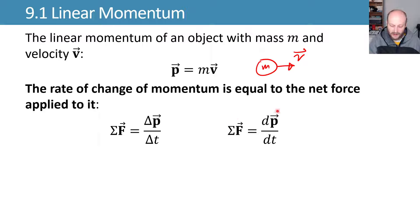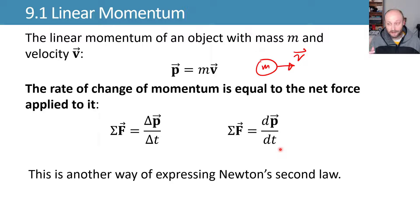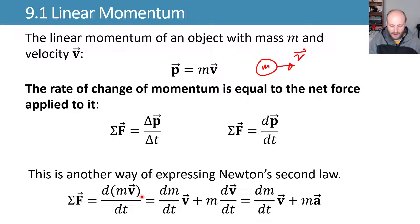So sum of your forces are equal to dp dt. You might be used to sum of the forces are equal to mass times acceleration, and if we start with our linear momentum and substitute in mass times velocity, we can see that we have d(mv) dt.